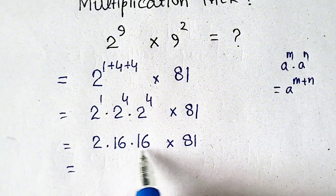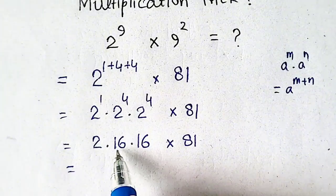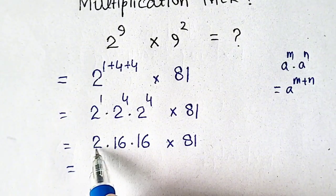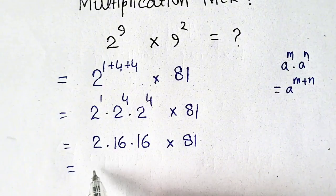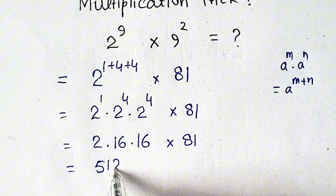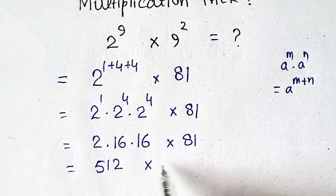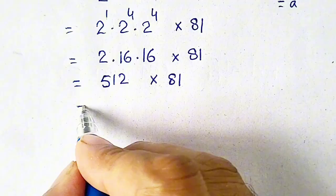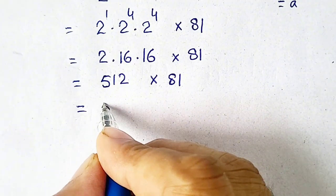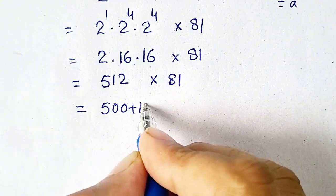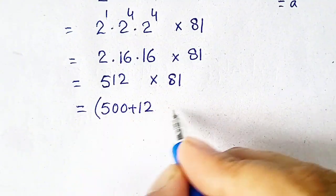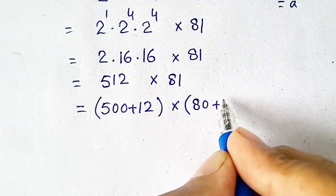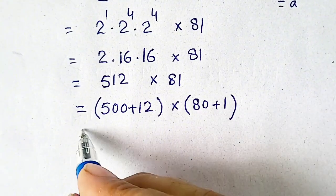When we multiply 16 squared, it equals 256. And 256 multiplied by 2 is 512 times 81. Now we will write 512 in a new way, meaning it is 500 plus 12. And 81 will be written as 80 plus 1.